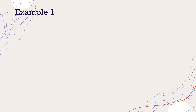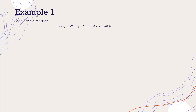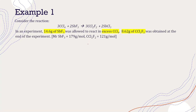I will show you just one example. Consider this reaction: 3CCl4 reacted with 2SbF3, producing 3CCl2F2 and 2SbCl3. In an experiment, 14.6 grams of SbF3 was allowed to react with CCl4 in excess. So now we already know that SbF3 is the limiting reactant because CCl4 is in excess — if CCl4 is in excess, it means you have a lot of it, but SbF3 is the limiting reactant and will be fully consumed at the end of the process.